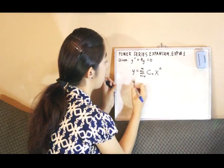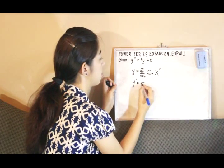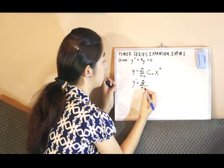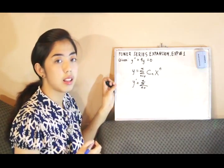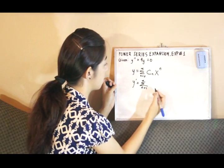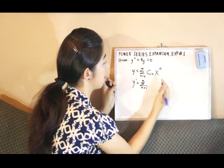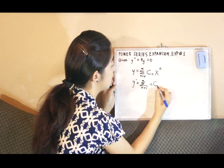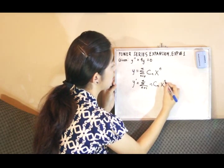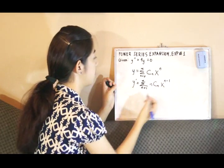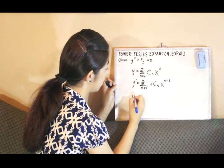we will have y prime equivalent to the summation of terms when n is initially equal to 1, of n times c sub n, x raised to n minus 1. Deriving this again,